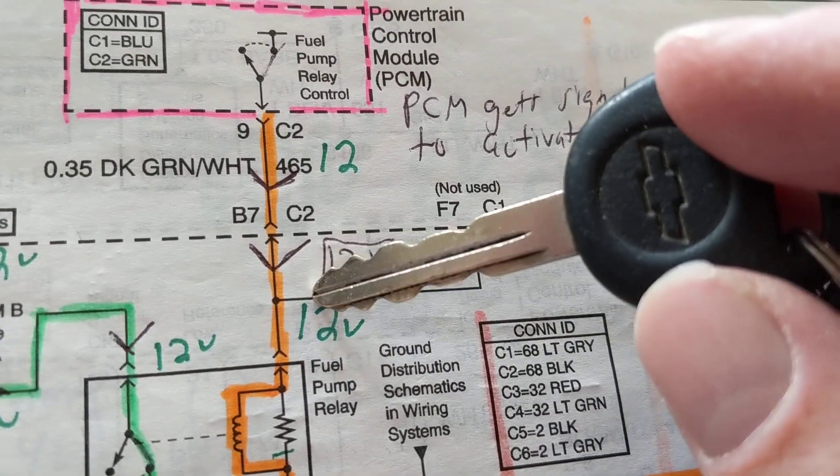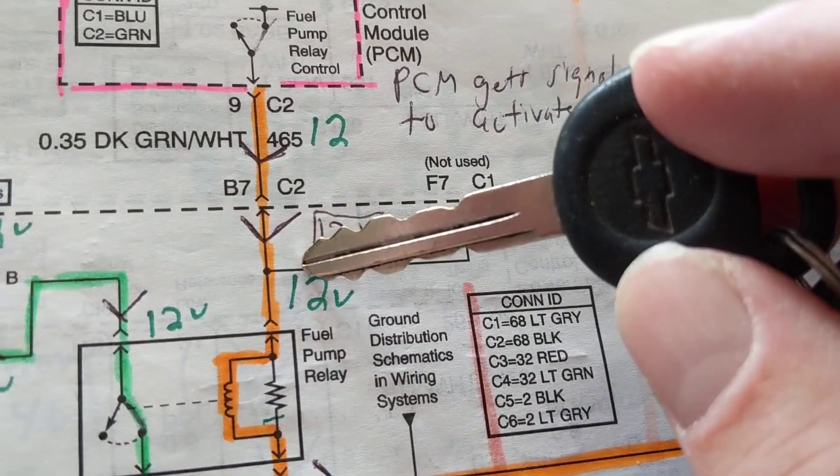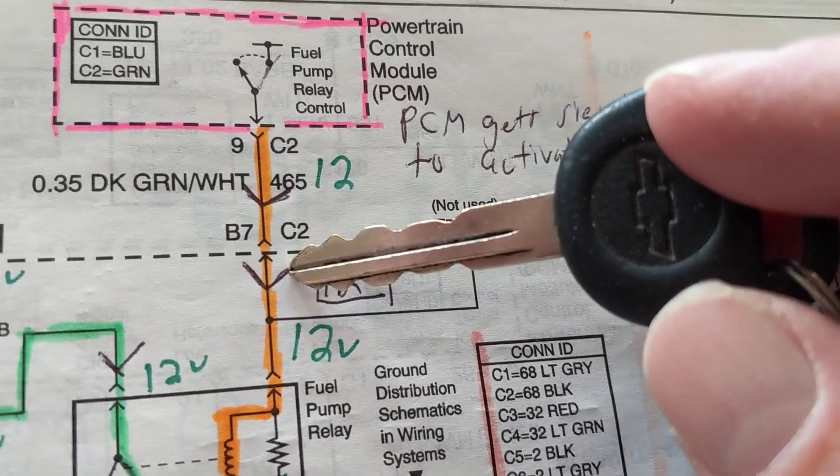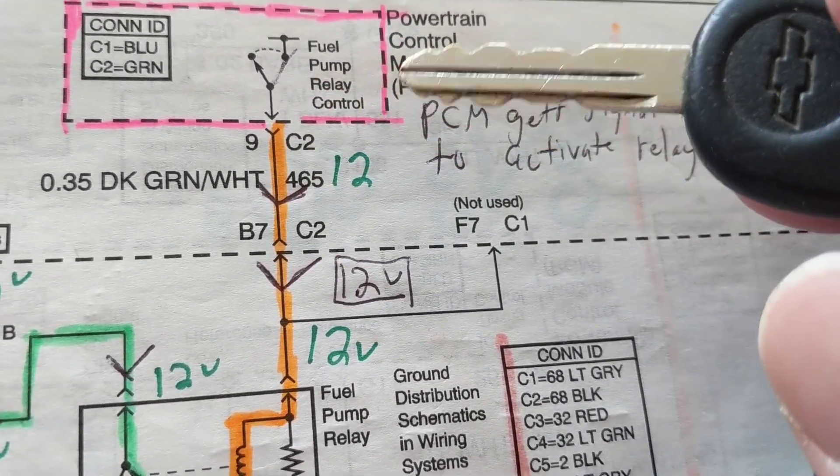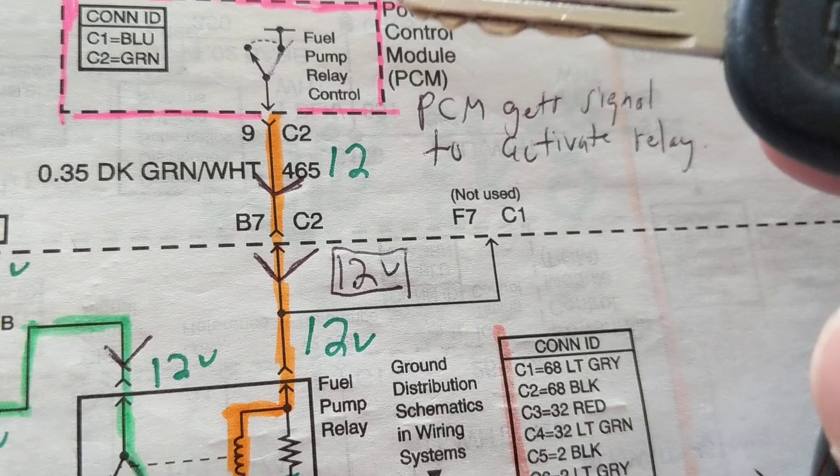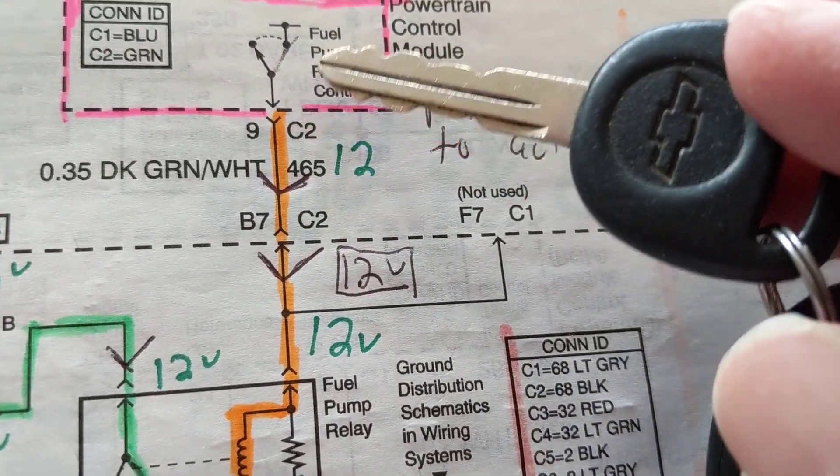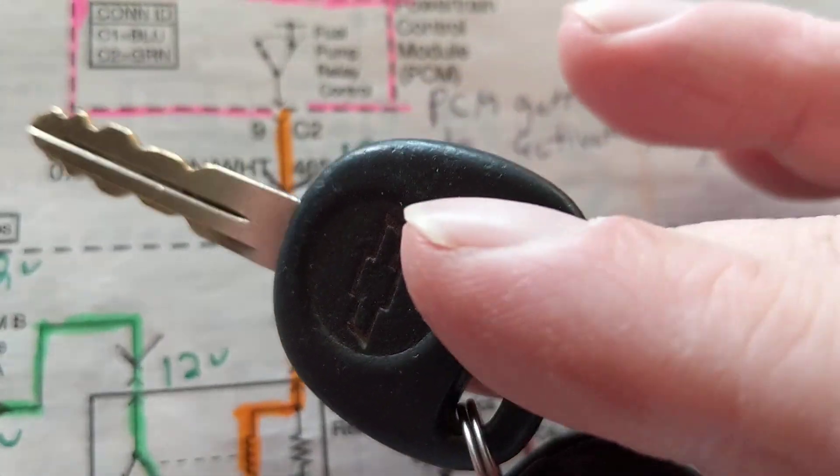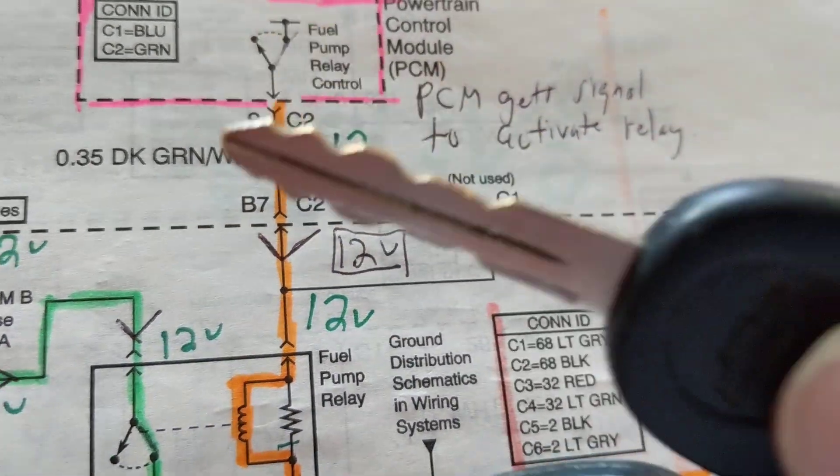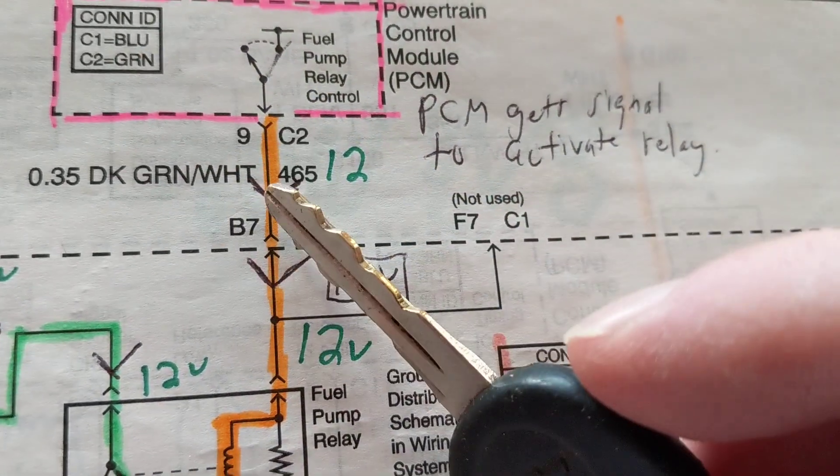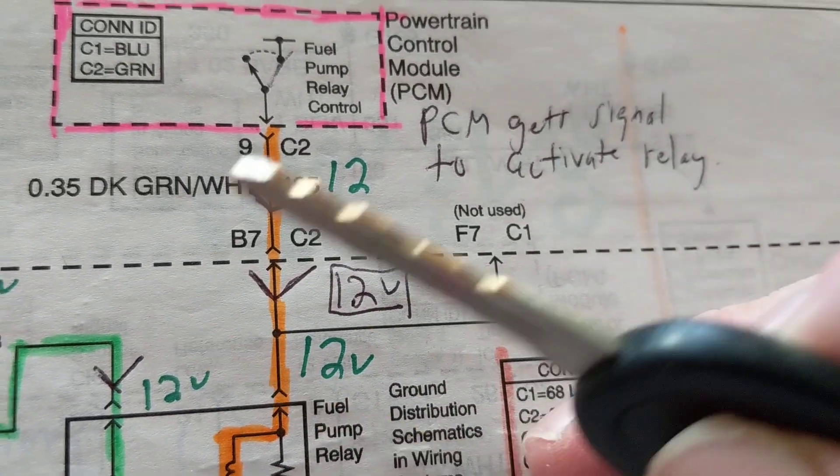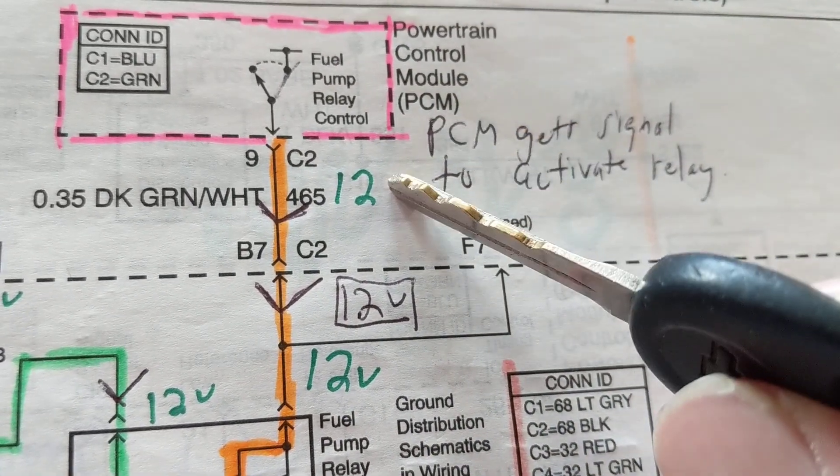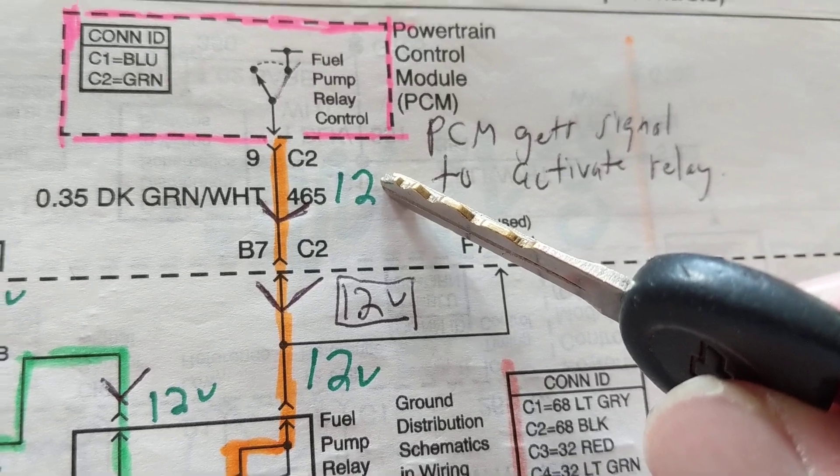So now what are we dealing with? We're dealing with a couple of things. Let's say this does not turn on. I come over here and I measure 12 volts at the relay at this point B7C2. Now I got a problem. This never turned on. Why? Is it the fault of the PCM? Is it the fault of the BCM? Is it the fault of the anti-theft system? Is it the fault of the key? Maybe there's something wrong with the key. Look how many variables we're dealing with.